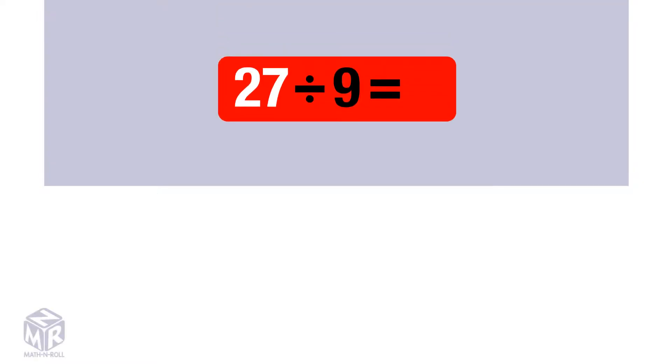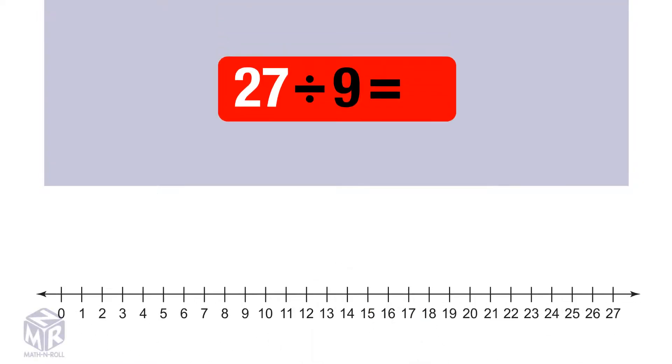Let's try another example. 27 divided by 9. Start at 27. Count back by 9s.